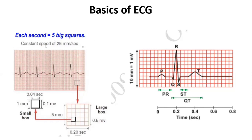Each second of ECG contains five big squares, so one large box is 0.2 seconds. If we divide 0.2 seconds by five, one large box contains 25 small squares. One small box is equal to 0.04 seconds, with a height and length of 1 mm. A large box has a height and length of 5 mm, equal to 0.20 seconds.